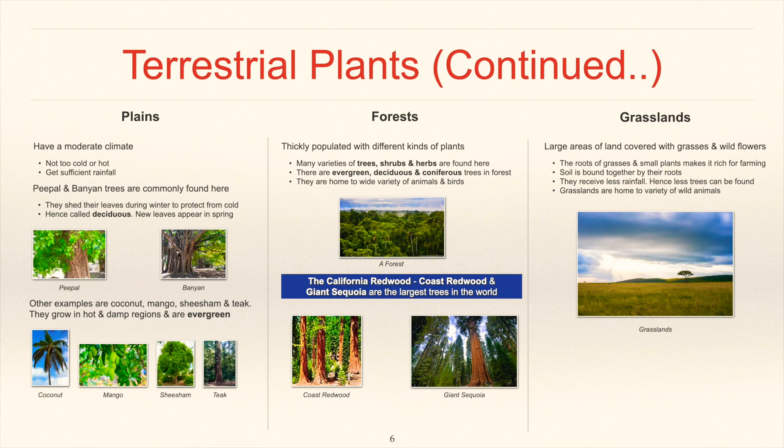They receive less rainfall, hence less trees can be found. Grasslands are home to a wide variety of wild animals. Here is a picture of a grassland.